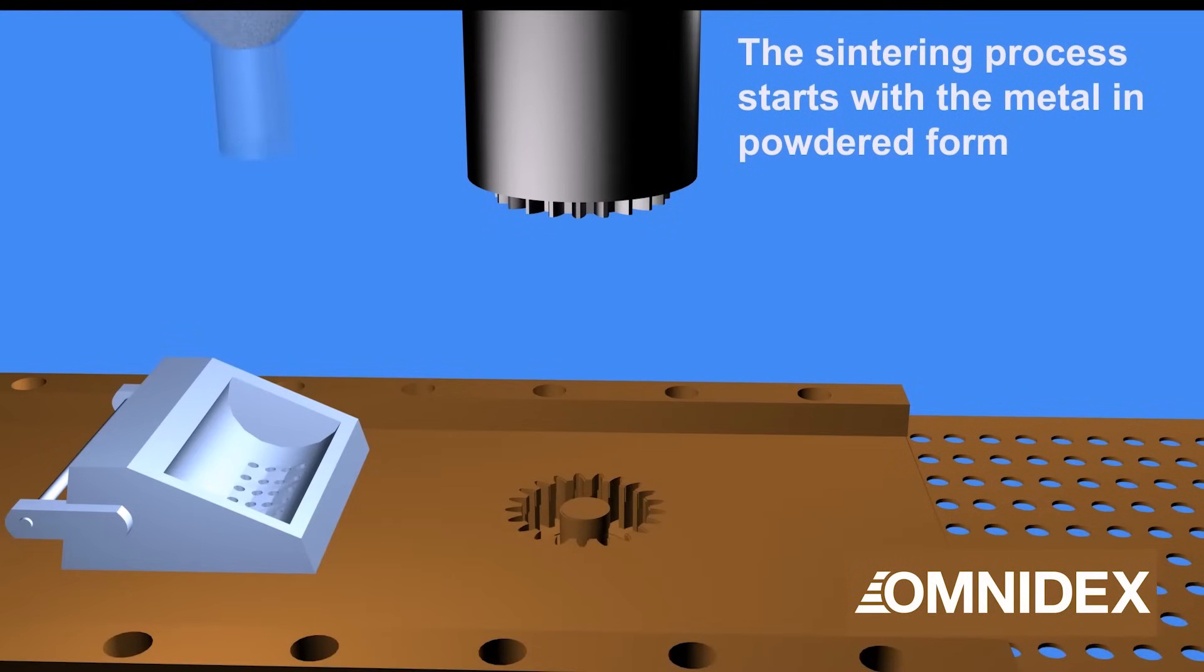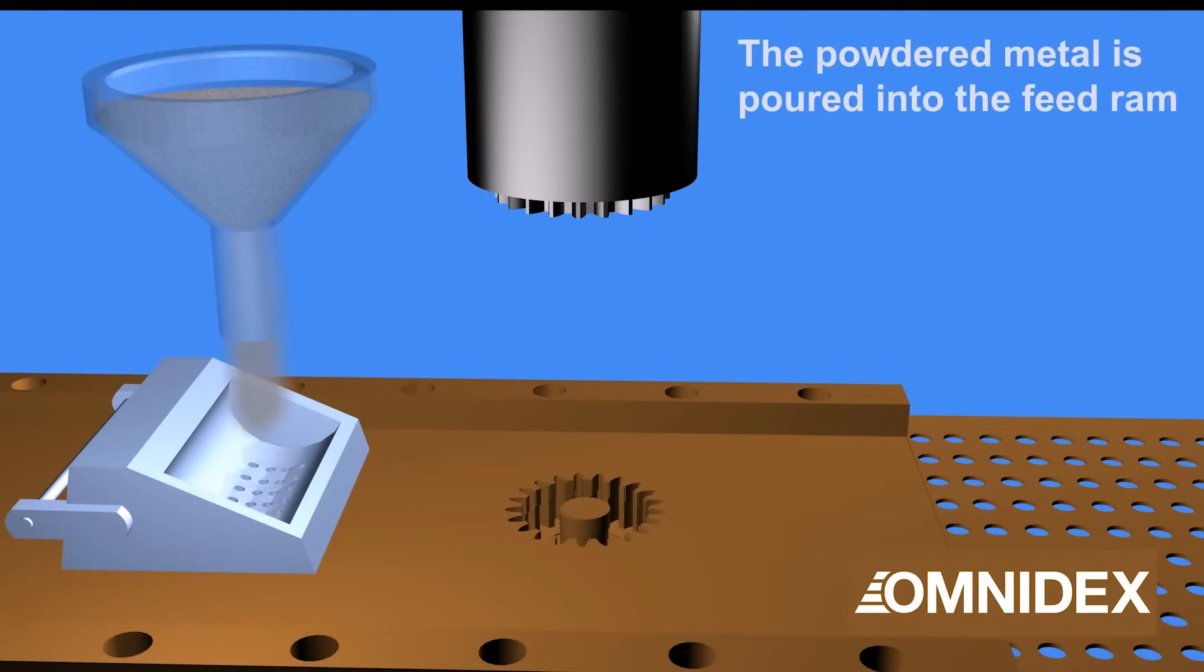The sintering metal process, also called press and sinter process, starts with a metal powder. Other alloys can be added into the mix to give different properties to the finished product.